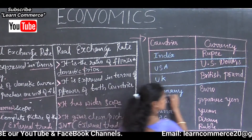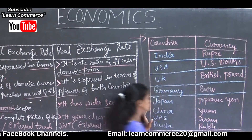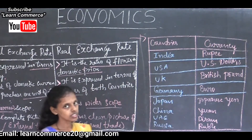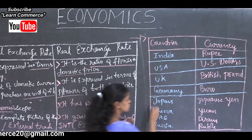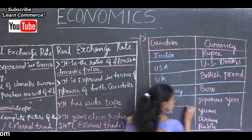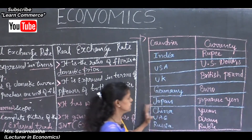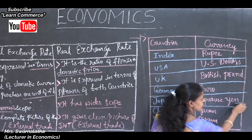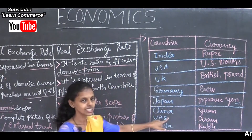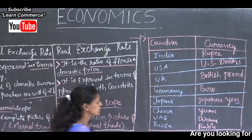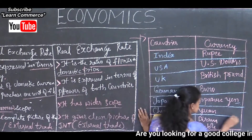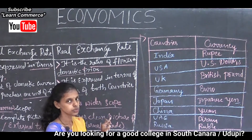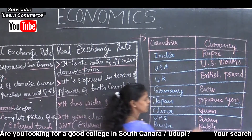Germany uses the Euro to purchase commodities through exchange. Japan's currency is the Japanese Yen — Y-E-N. China's currency is the Yuan — Y-U-A-N.